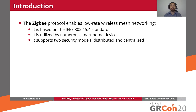Furthermore, Zigbee supports two security models in order to provide a balance between usability and security. The first security model is the distributed security model, which is recommended for ease of use, while the second one is the centralized security model, which is recommended for higher security.